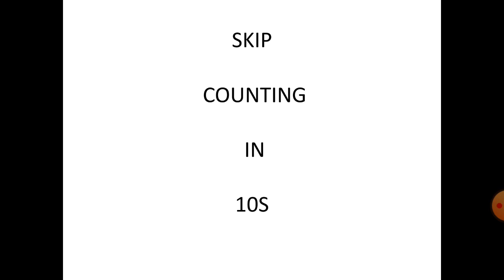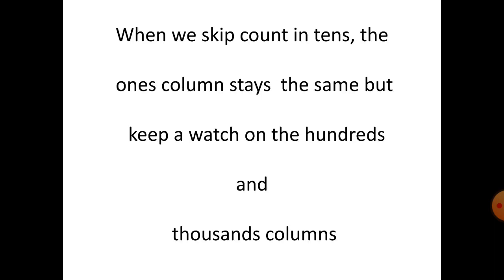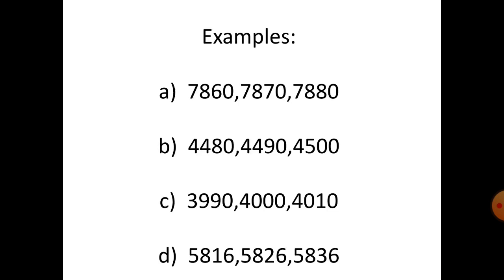When we skip count in tens, the ones column stays the same, but keep a watch on the hundreds and thousands columns. Example: seven thousand eight hundred and sixty — add ten — seven thousand eight hundred and seventy.